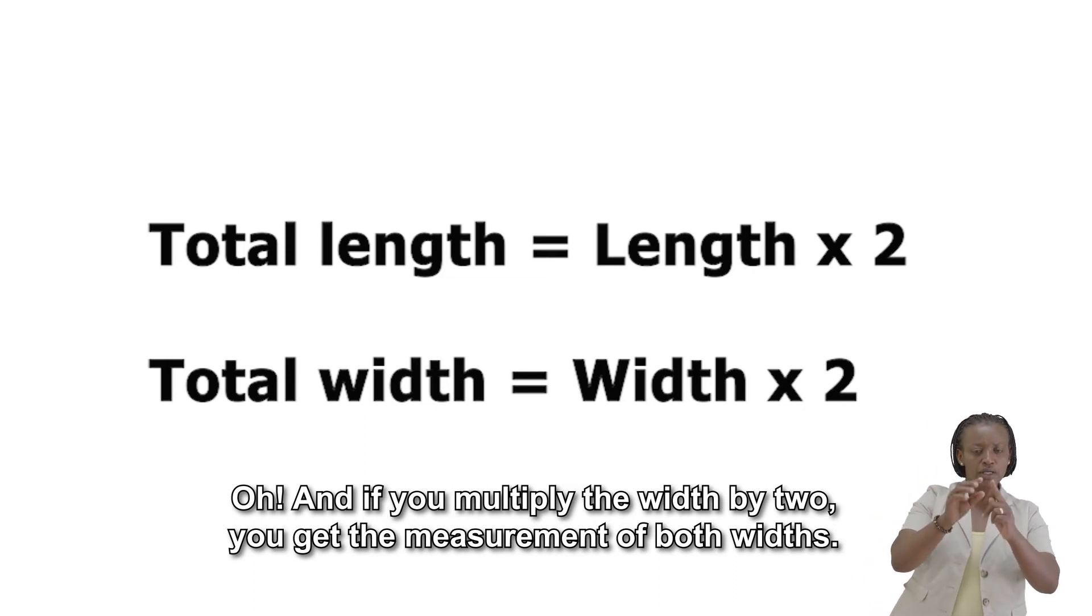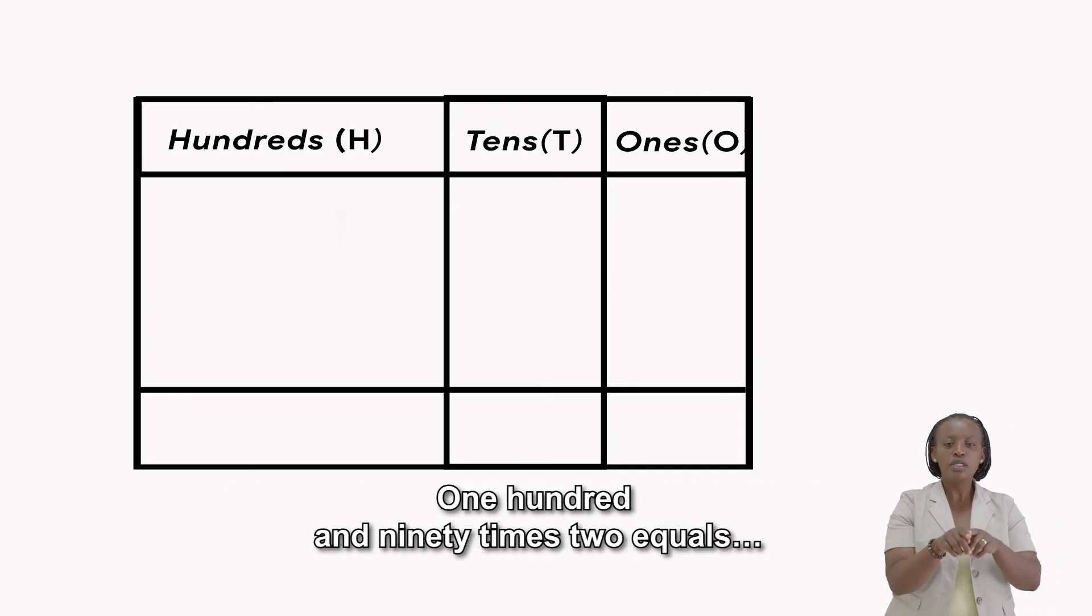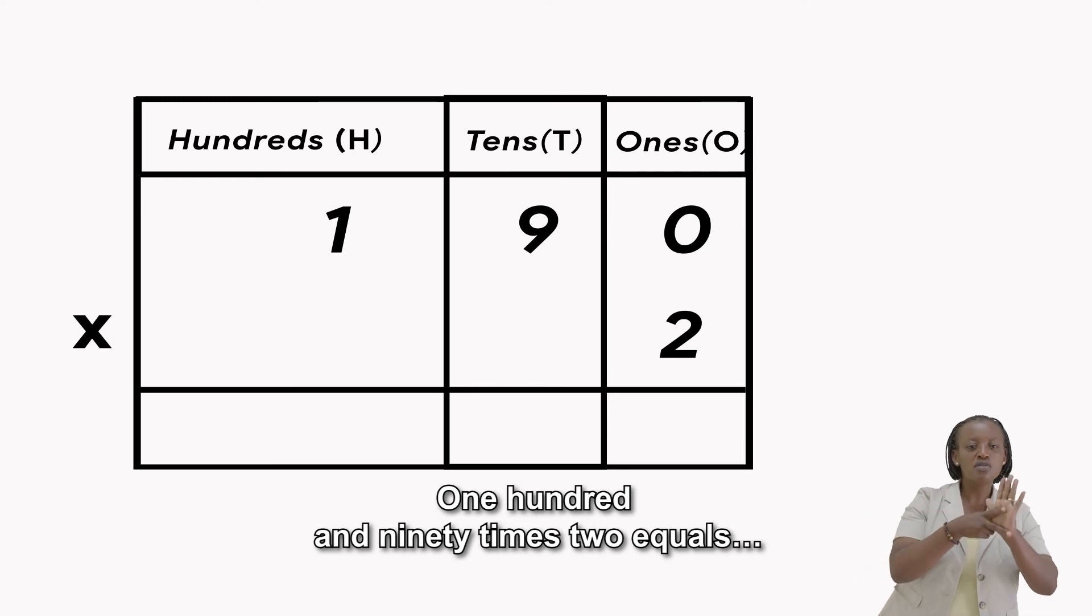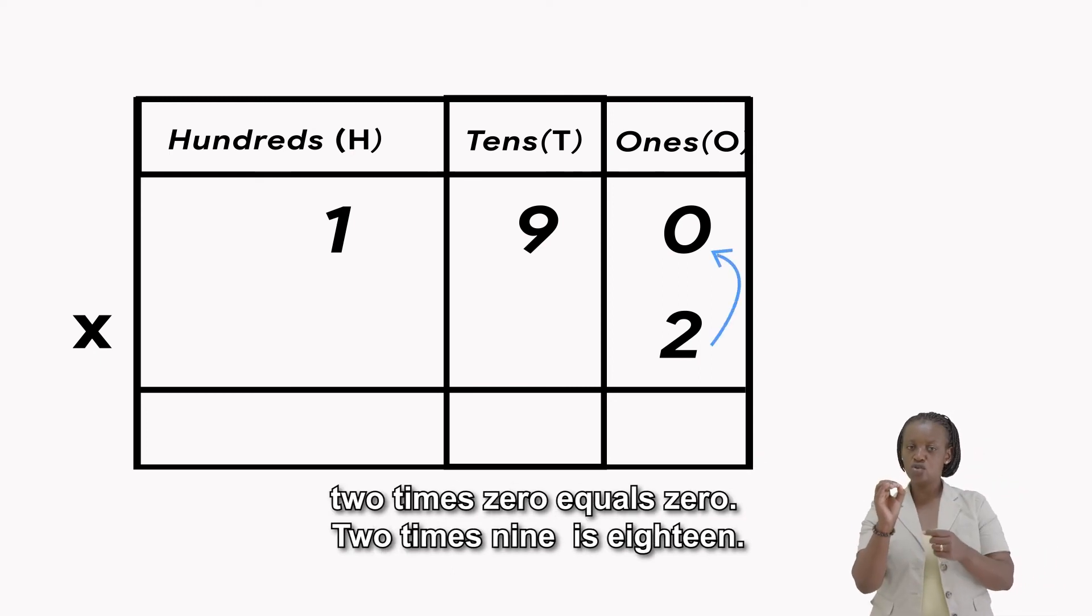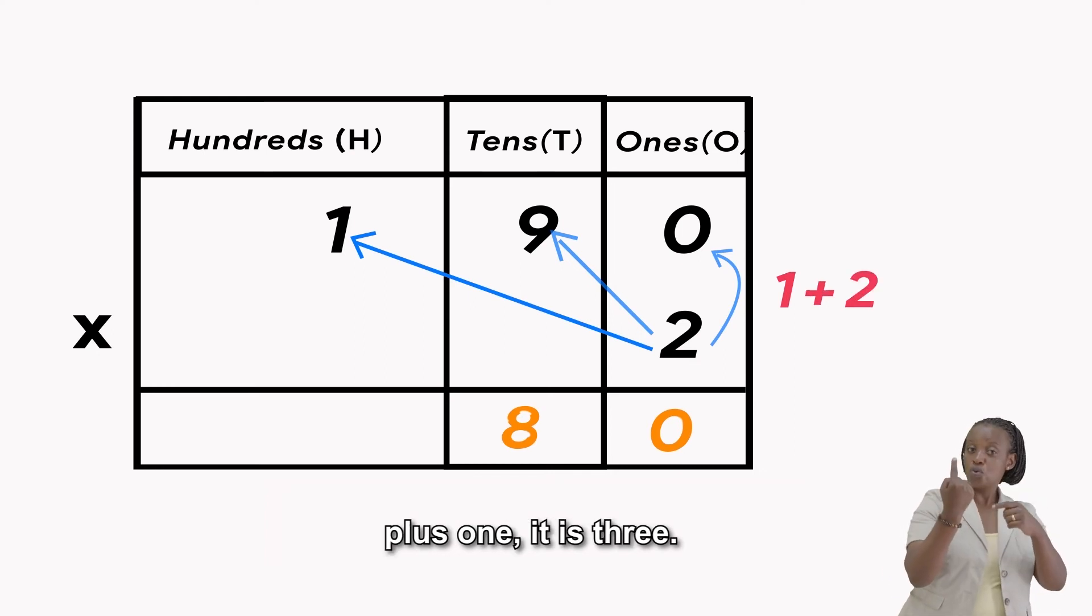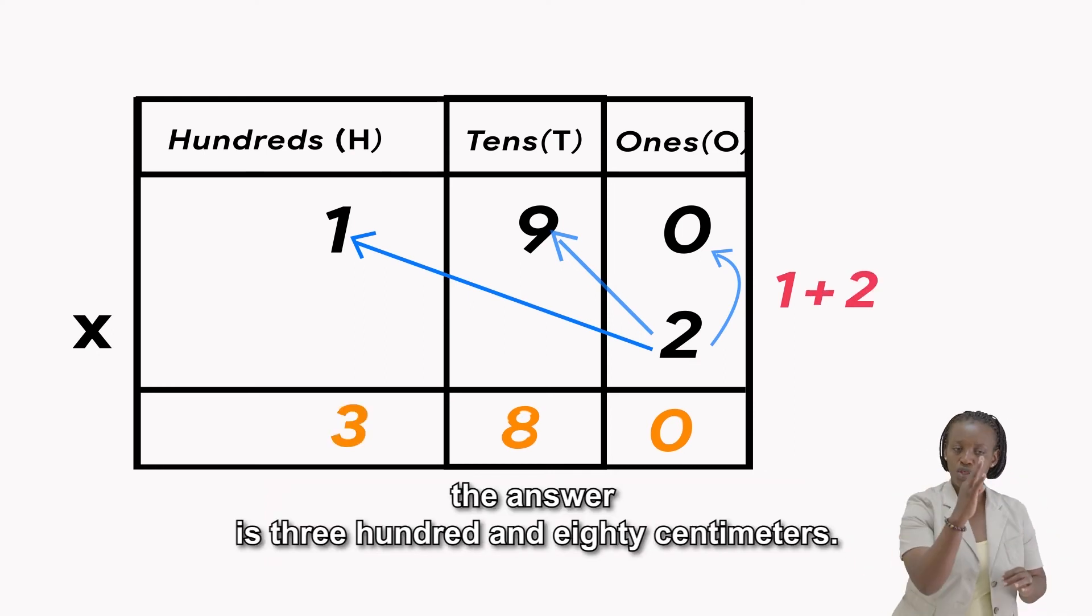And if you multiply the width by 2, you get the measurement of both widths. 190 times 2 equals: 2 times 0 is 0, 2 times 9 is 18. All right, write 8 and keep 1. And 2 times 1 equals 2, plus 1 is 3. The answer is 380 centimeters.